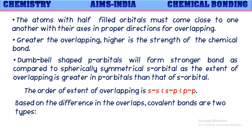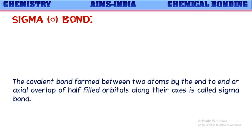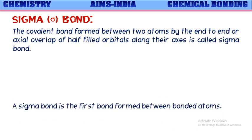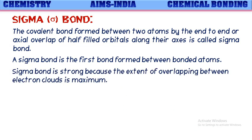Based on the difference in overlaps, covalent bonds are of two types: the sigma bond and the pi bond. The covalent bond formed between two atoms by the end-to-end or axial overlap of half-filled atomic orbitals along their axis is called a sigma bond. A sigma bond is the first bond formed between bonded atoms — when two atoms approach to form bonds, first a sigma bond is formed. Sigma bond is a strong bond because the extent of overlapping between electron clouds is maximum.